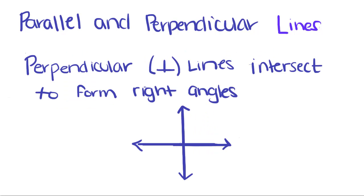Perpendicular lines intersect to form right angles, and we denote this by a little square, just like we denote any kind of right angle. Each one of these angles right here is a right angle, so they all measure 90 degrees.